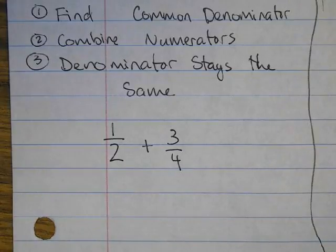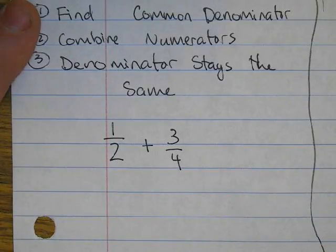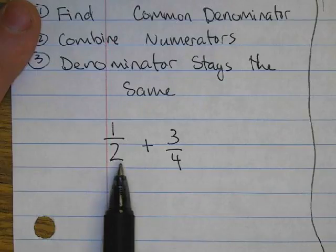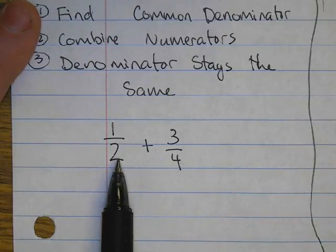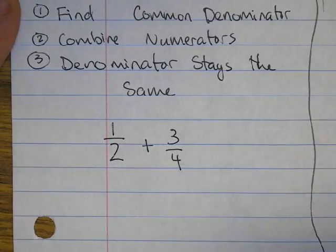We can find a common denominator. There are two ways to do it: find the least common denominator, or find any common denominator. An easy way is to multiply